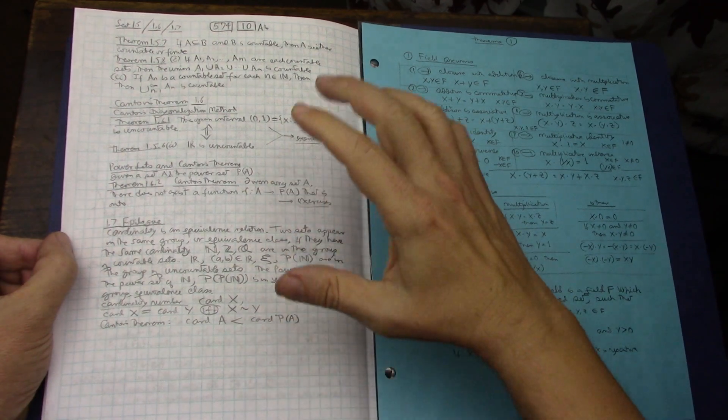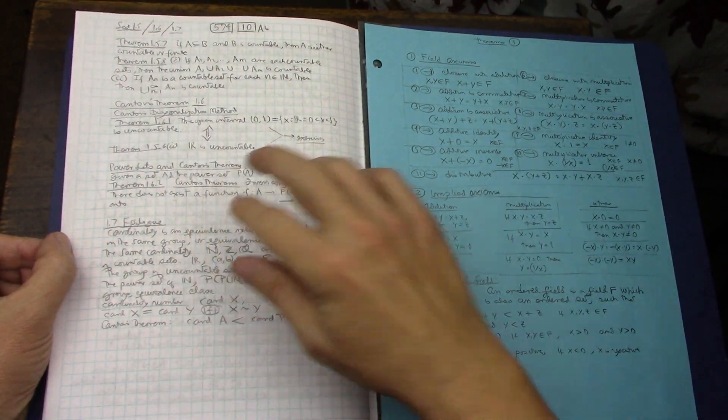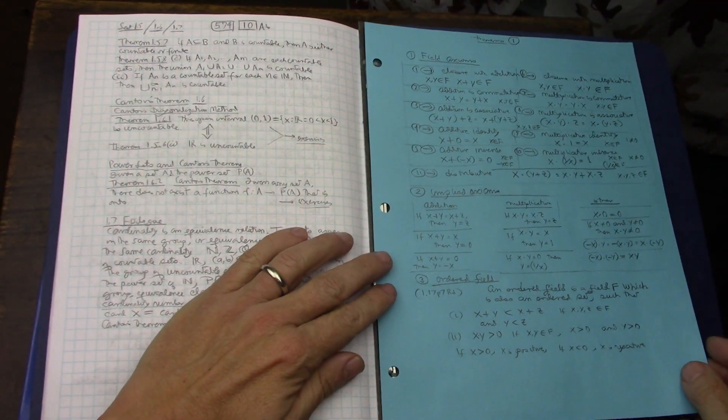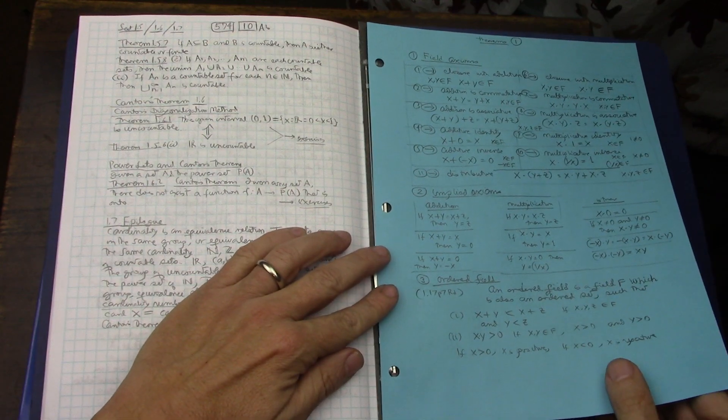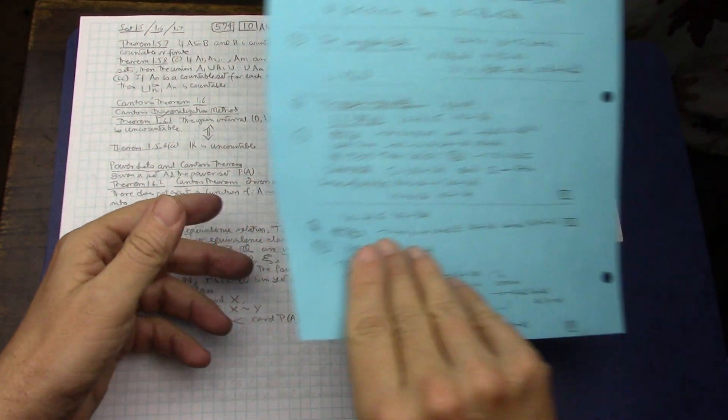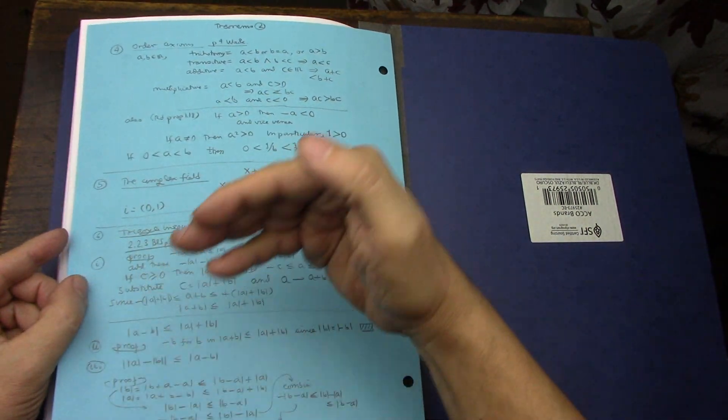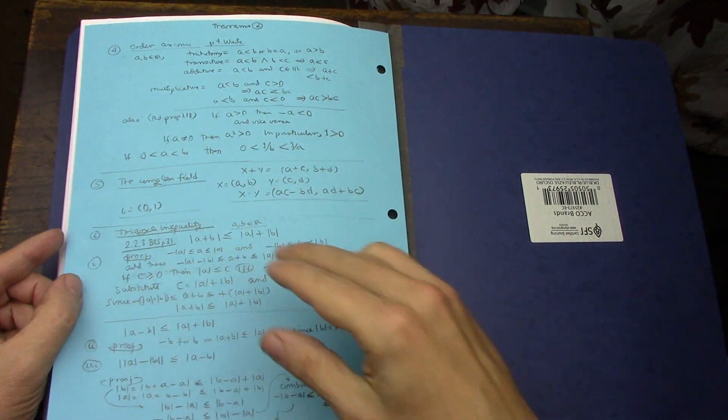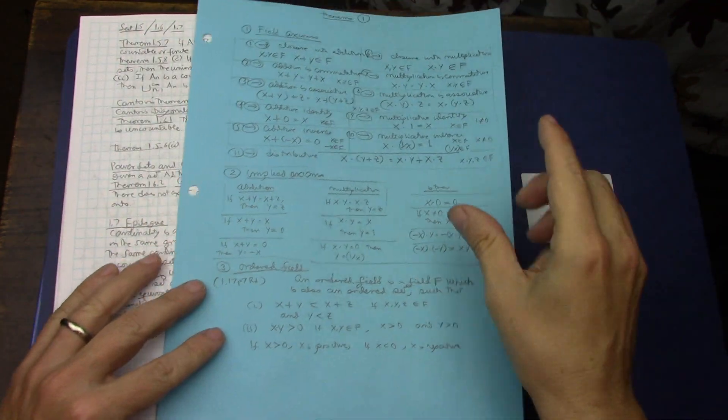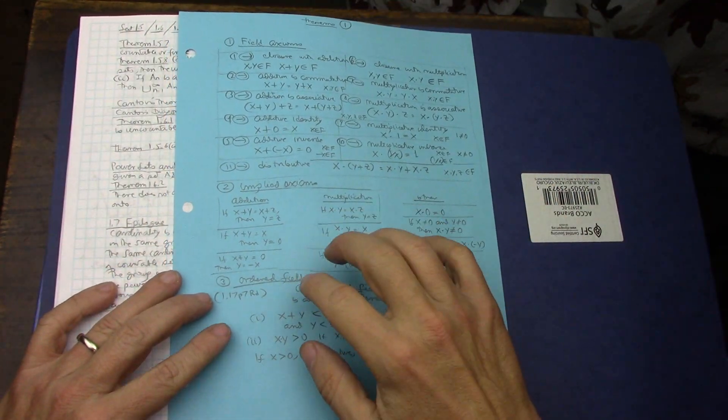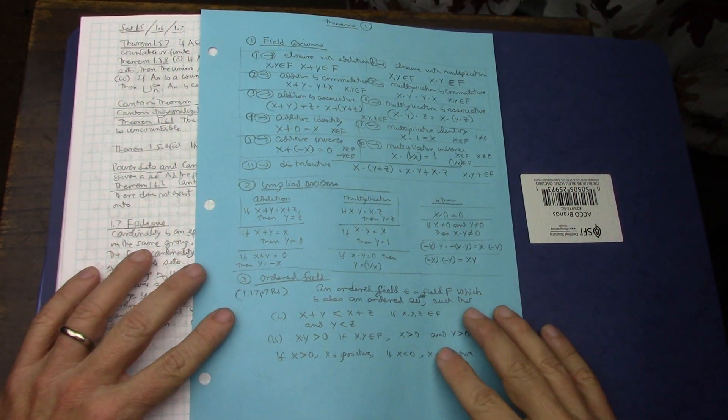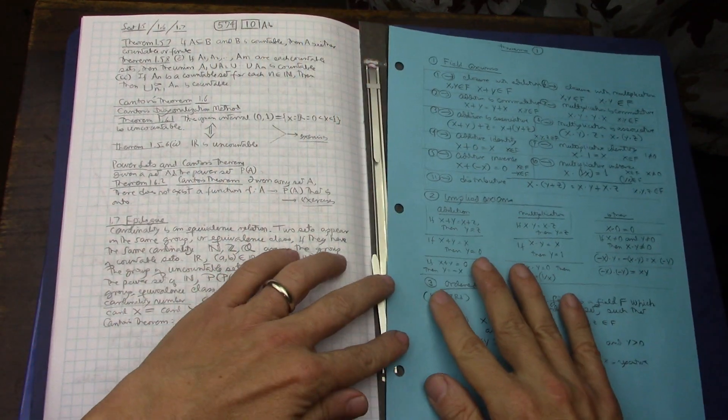So that is the end of chapter one for Abbott. And just briefly, I'll show where I'm going next, which is just coming up with basic layouts for all the theorems, the major theorems, numbering them so that I can start practicing about being able to master these theorems. I would like to master them by heart. I'm not sure that I'll be able to.